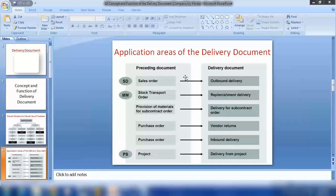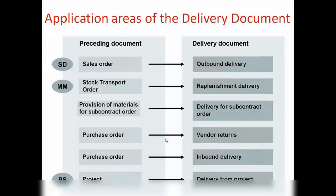We have different types of deliveries for different types of processes — purchase orders, sales orders, and stock transport orders. A stock transport order is used when sending stock from one plant to another plant, which is an MM-side process. In that case, we create a replenishment delivery. We will discuss more about these delivery types.